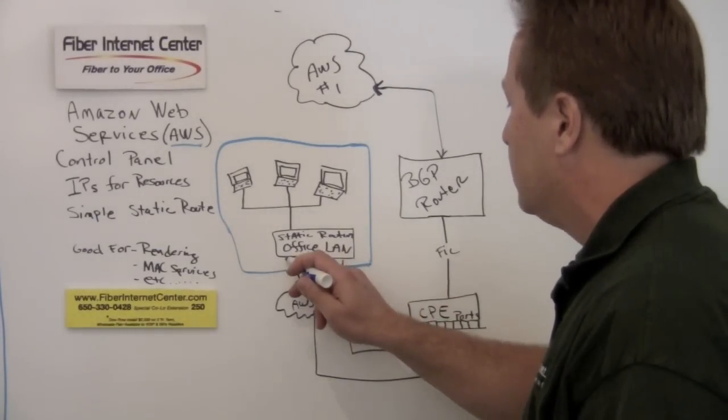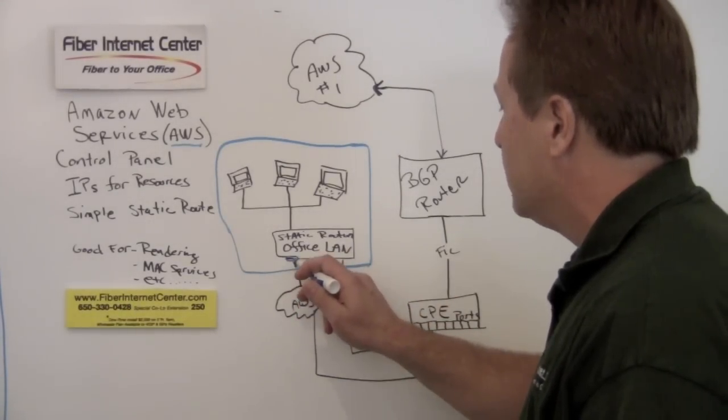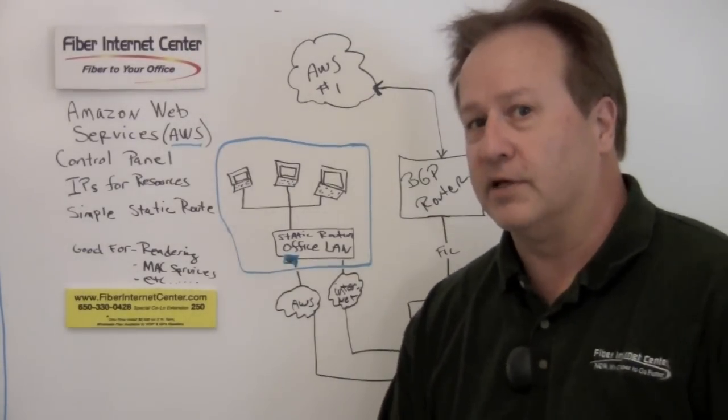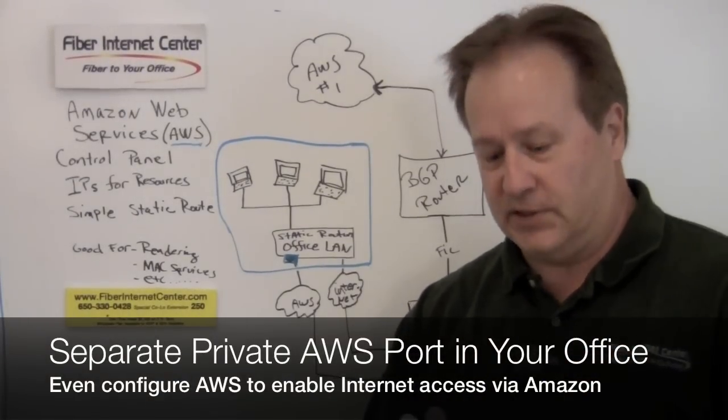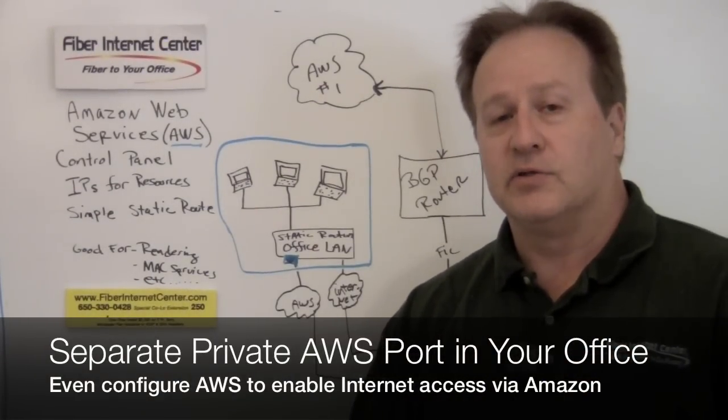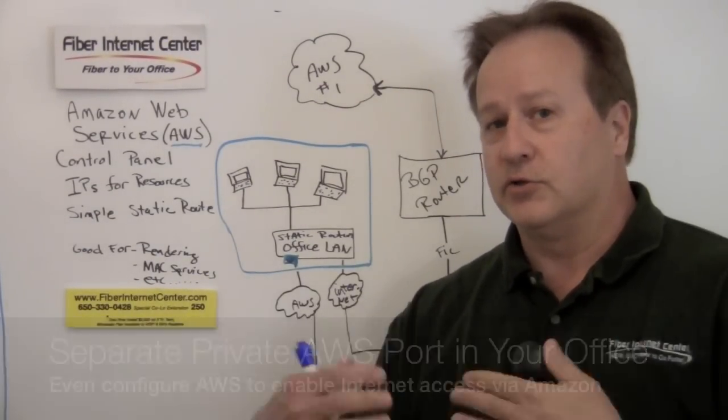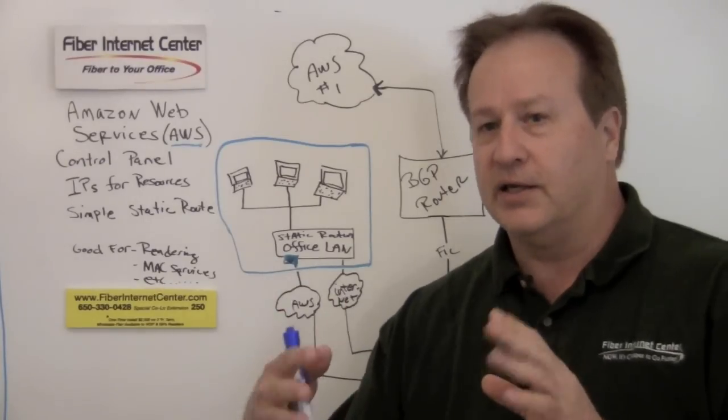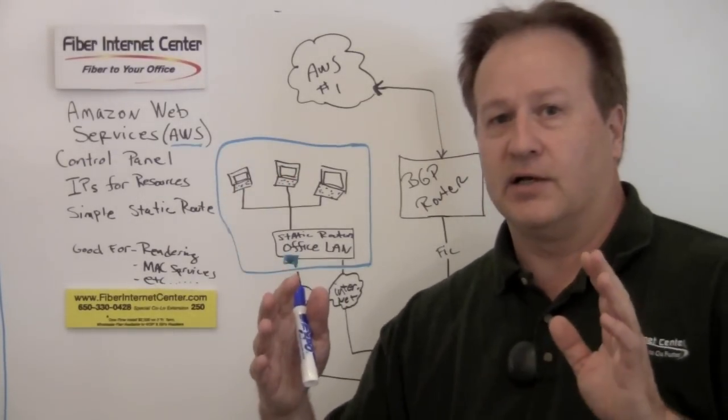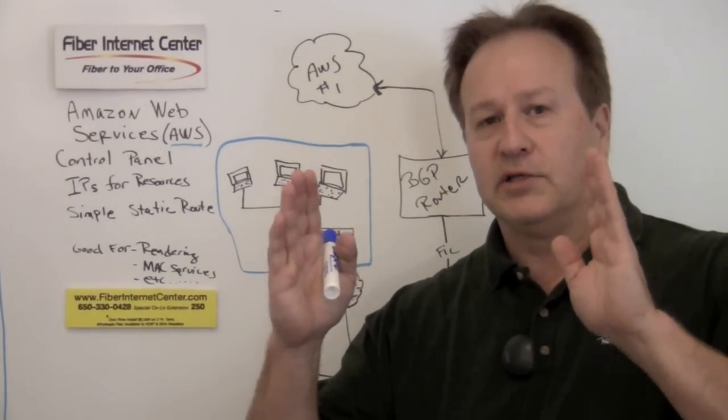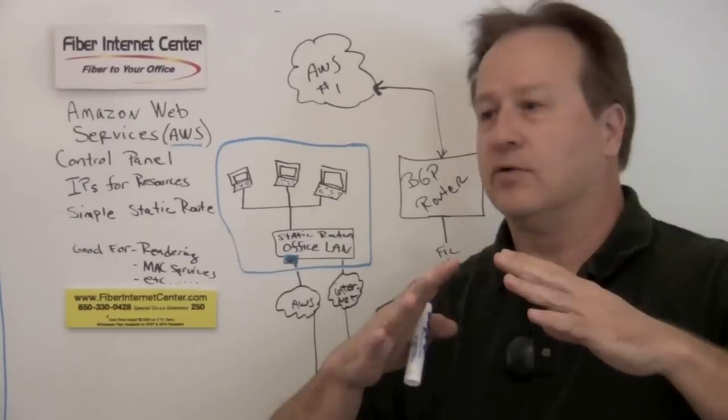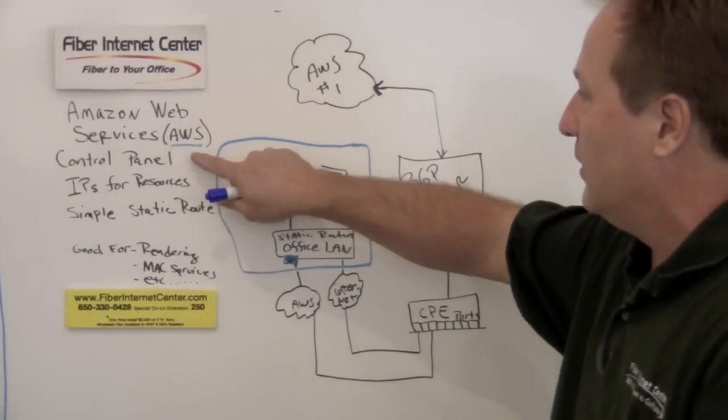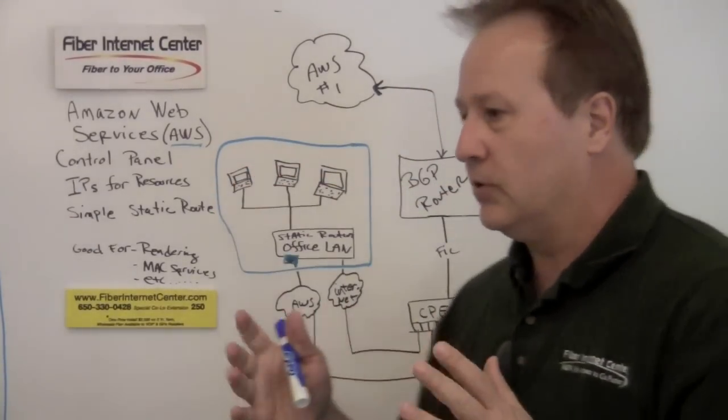And we bring that into your office. But what's really unique is we give the Amazon Web Services their own separate port in your office. And for those of you who have Amazon Web Services, you might notice that there's a way for you in the control panel. So when you log in at aws.amazon.com, you'll actually discover that when you sign up for the service, there's a control panel.